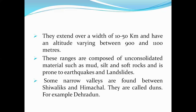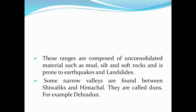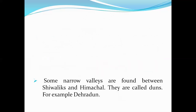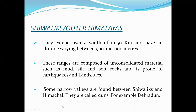The Lesser Himalayas, also called Himachal, are composed of highly compressed and altered rocks with altitude varying between 3,700 and 4,500 meters and an average width of 50 kilometers. The Pir Panjal range forms the longest and most important range; Dhauladhar and Mahabharata ranges are also prominent. This range contains the famous valleys of Kashmir, Kangra, and Kulu Valley in Himachal Pradesh, well known for hill stations.